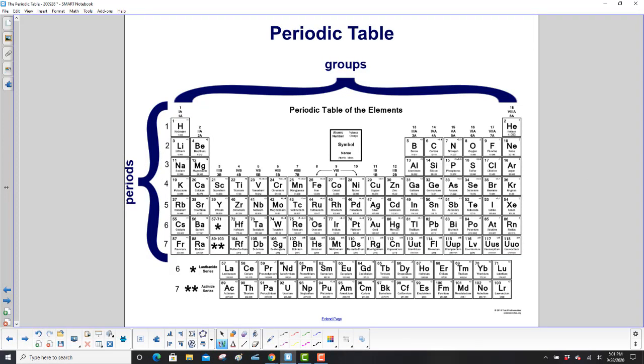Here is the full periodic table, and you have the groups, which go down in this direction. Okay, so this here is group 16, this is group 17. And going crosswise, you have periods 1, 2, 3, 4, 5, 6, 7, etc.